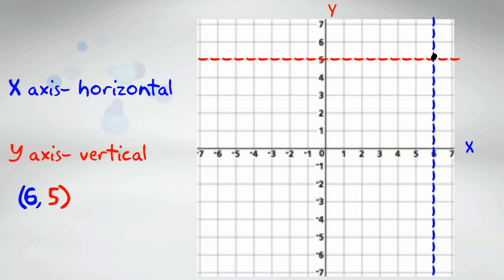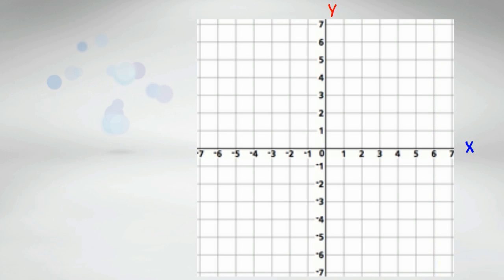That is the location of the point. Now let's take a look at the next coordinate. Negative 4 is the location on the x-axis as noted by the blue dotted line, and 3 is the location on the y-axis as noted by the red dotted line. Where the two lines intersect, there is a black dot.